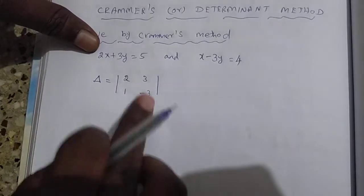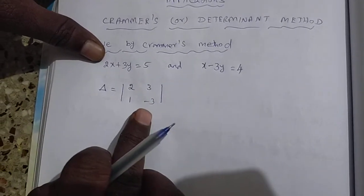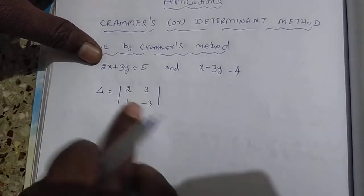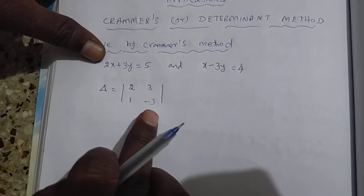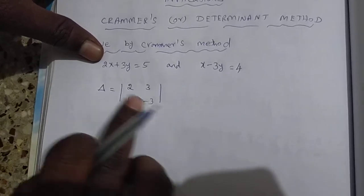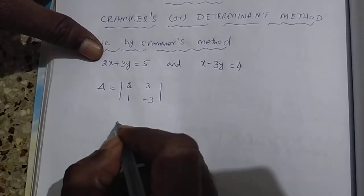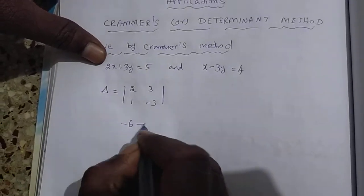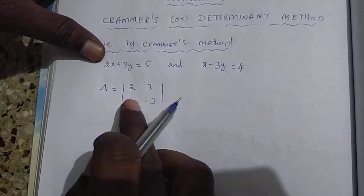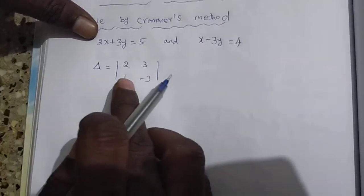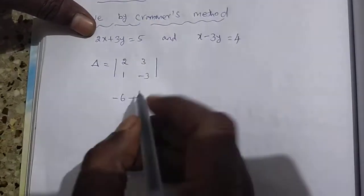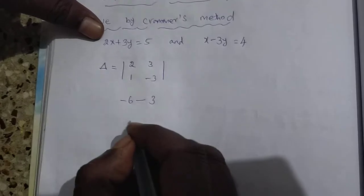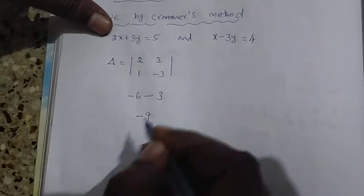Now we have to find the value of delta. The method of finding the value: minus 3 into 2 is minus 6, minus 1 into 3 is 3. So the answer for delta is minus 9.